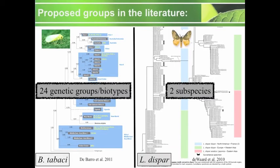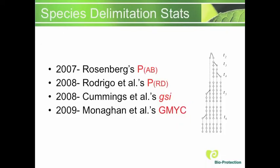On the left you'll see there are 24 genetic groups for Bemisia tabaci, and two subspecies of Lymantia dispar on the right. We wanted to use species delimitation statistics to test the predefined groups.